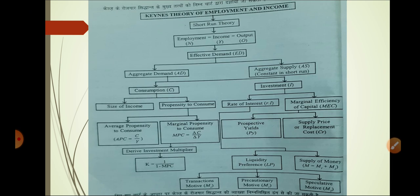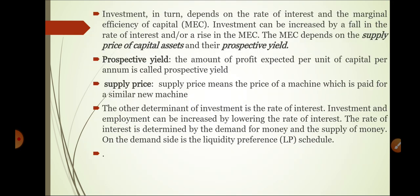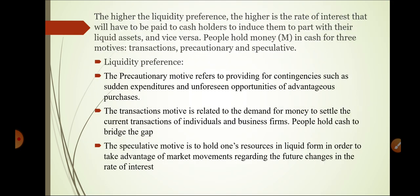In the aggregate demand investment part, two things come: rate of interest and marginal efficiency of capital. Rate of interest is determined by liquidity preference and supply of money. Liquidity preference is divided into three things.